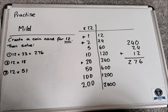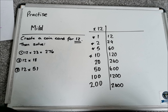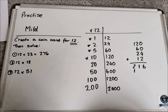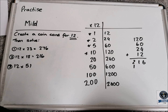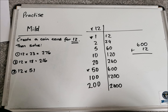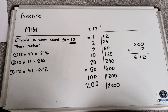The next question was 12 times 18. I'm going to use 10, 5, 2, and 1 to make 18. Adding them up in a chimney sum at the side, I got 216. So the answer to 12 times 18 is 216. The last question was 12 times 51 — to make 51 I'm going to use 50 and 1. Adding 600 and 12, I get 612.